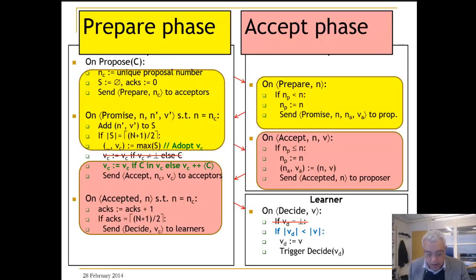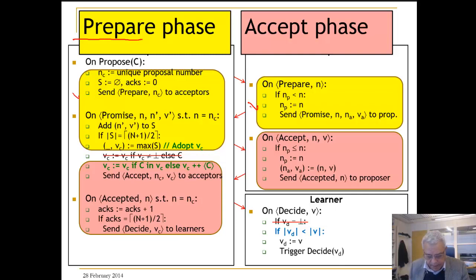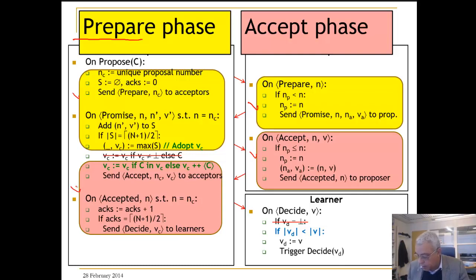Here is our algorithm. It consists of two phases: the prepare phase, which is shown in yellow, and the accept phase, which is in pink. On proposed, you start the prepare phase and collect promises — that is what you do here.